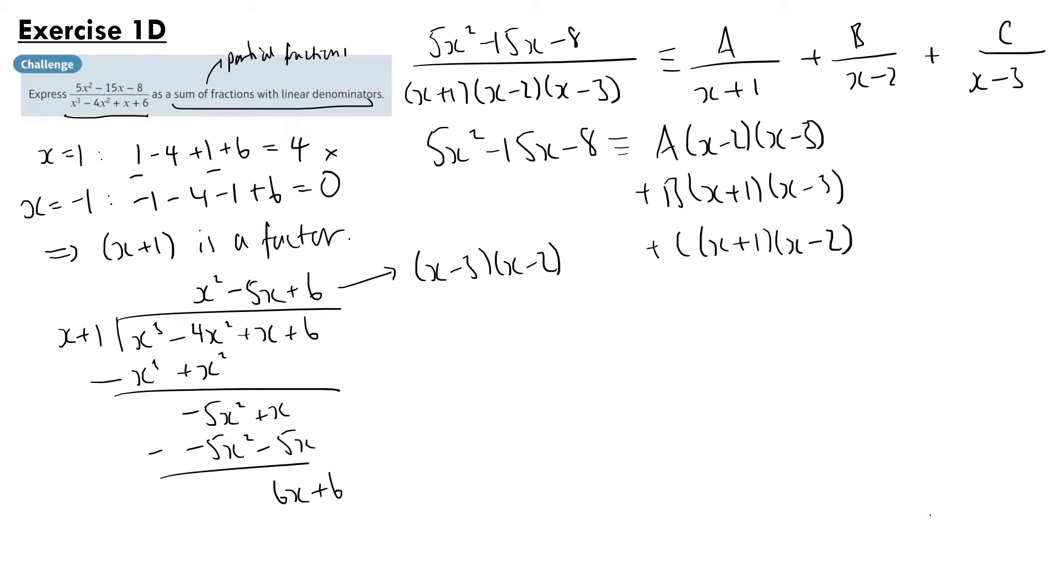Now we can let x be certain values. If we let x equal minus 1, then the b and c terms will equal 0. So we have 5 times 1 minus 15 times minus 1 minus 8 is equal to a times minus 3 times minus 4. So we have 5 plus 15 minus 8, that is 12, equals 12a. So a is equal to 1.